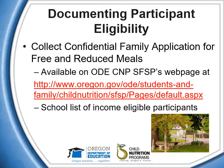If camp sponsors use the confidential family application for free and reduced price meals, the application can be found on ODE CNP's SFSP webpage at the link listed on this slide. Instead of individual income eligibility applications, camp sponsors may rely on lists of income eligible children provided by the school. Sponsors of camps are not required to submit the approved confidential family application or school lists of eligible children to ODE CNP. They must maintain the list or original approved forms for all eligible children in separate files for each camp session, and the documents must be available for review by ODE CNP.